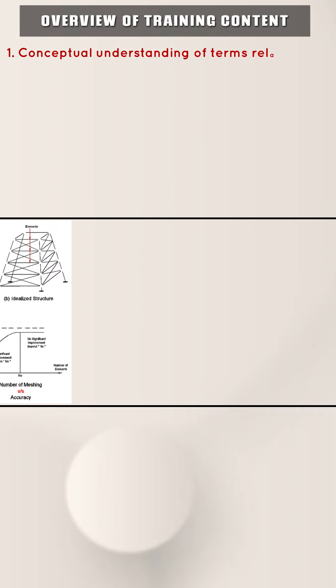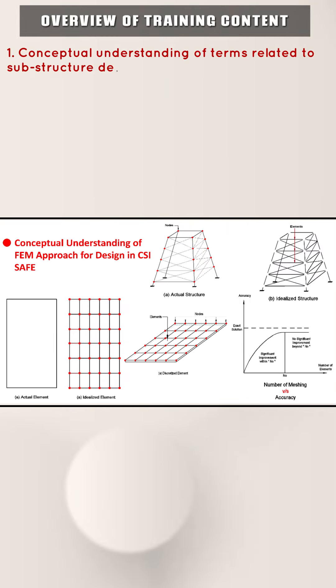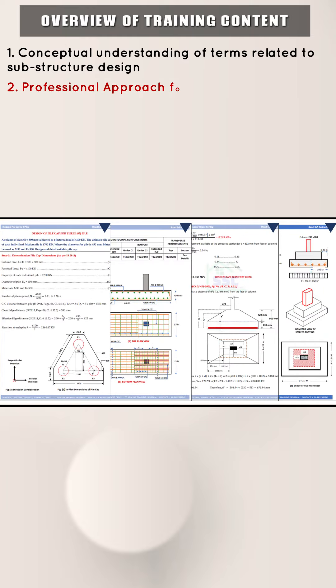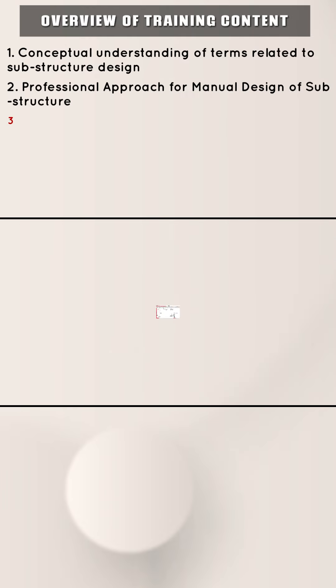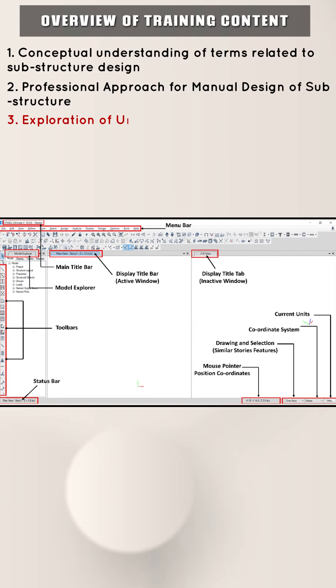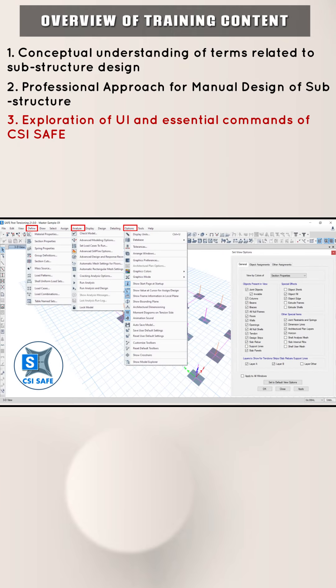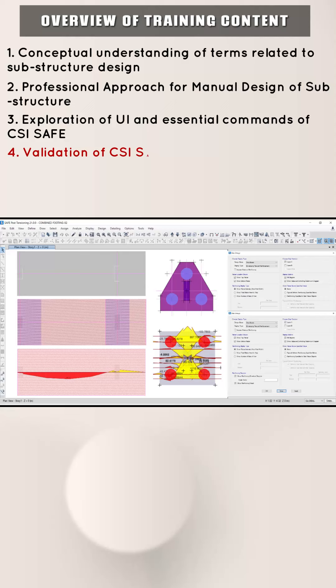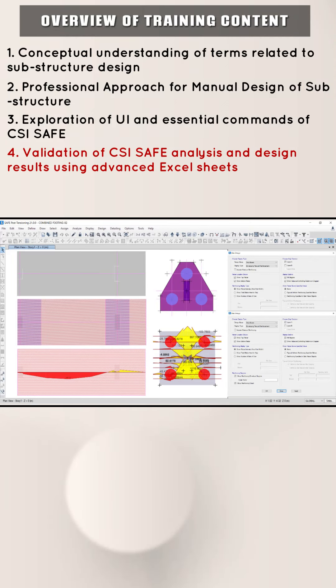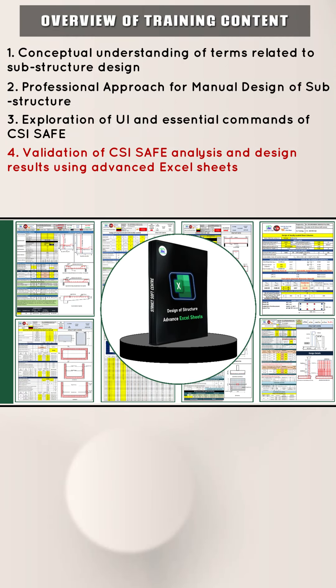In this complete training program, you are going to learn conceptual understanding of terms related to substructure design, professional approach for manual design of substructure, exploration of user interface and essential commands of CSI SAFE software for its seamless application in your projects, and validation of CSI SAFE analysis and design results using advanced Excel sheets to ensure accuracy and reliability of the software.